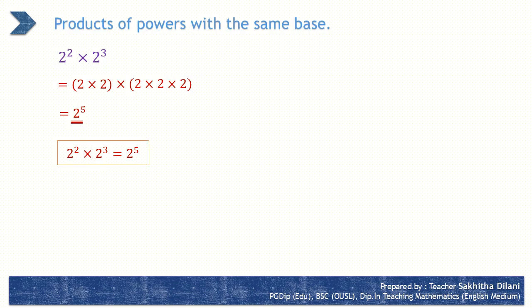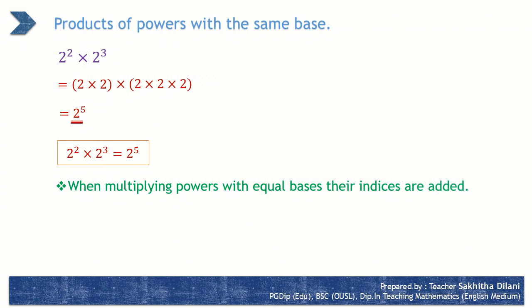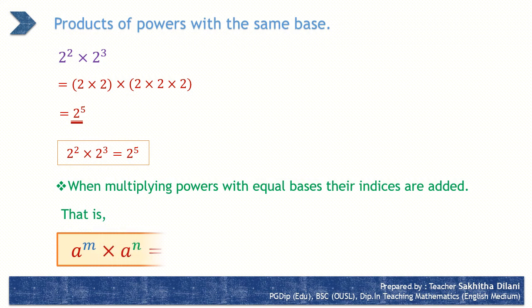This can be expressed as a law of indices. When multiplying powers with equal bases, their indices are added. That is, a to the power m into a to the power n equals a to the power m plus n. This law can be extended to any number of powers.